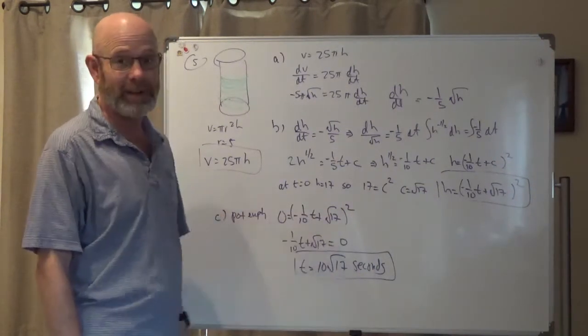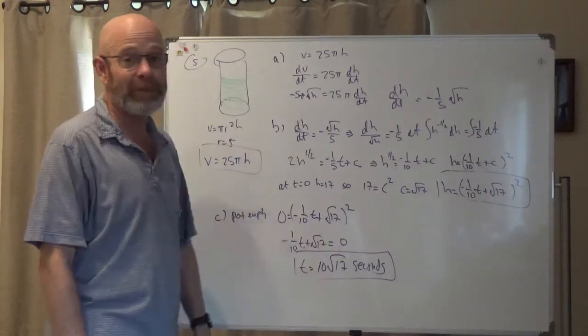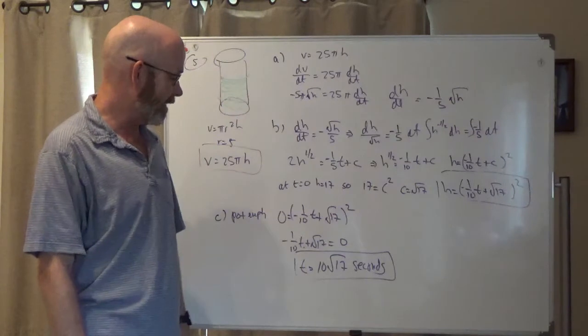Take the square root, still get zero. Negative one-tenth t plus root 17 equals zero. So t is 10 root 17 seconds.